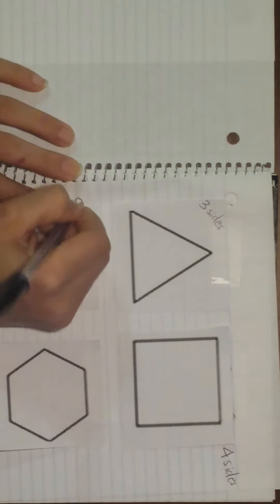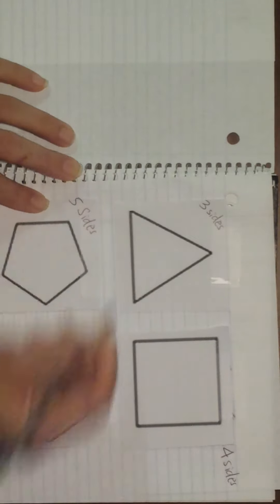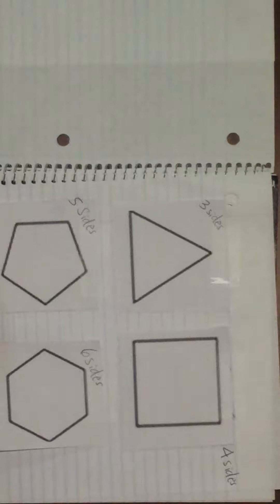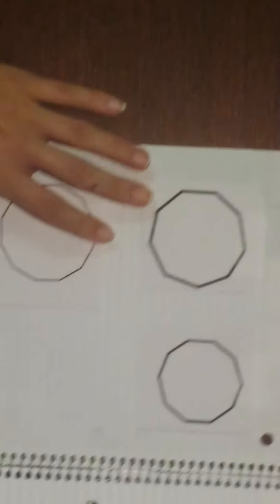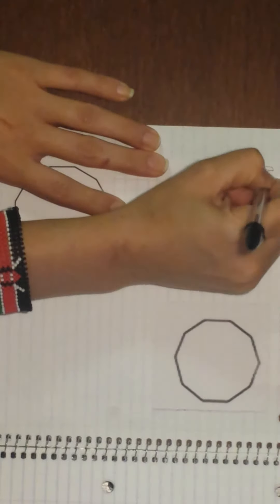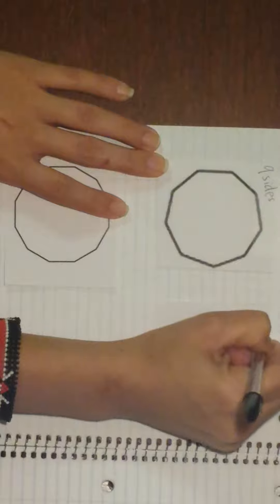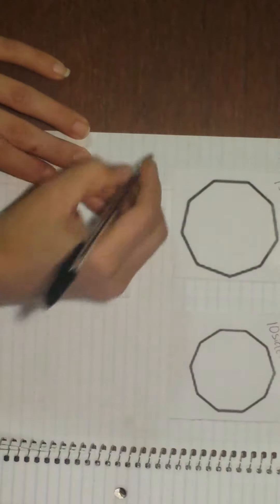This is five sides, this is six sides, this is seven sides, this is eight sides. On the back, this is nine sides, this is ten sides, and this one is actually twelve sides.